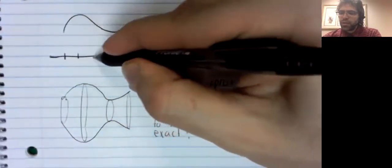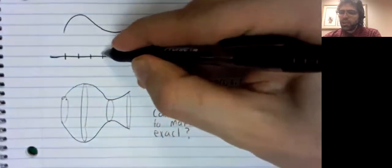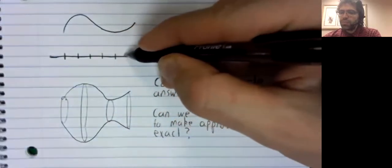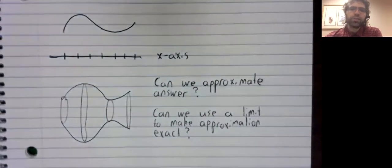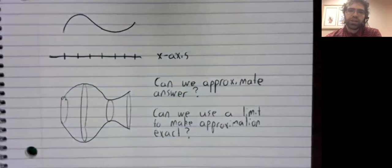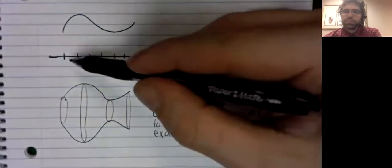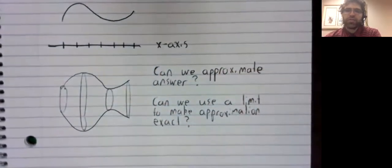We've done this once before when we were looking at area under a curve. And the method we used involved cutting the interval into little pieces, what we call a partition. So, let's look at this again. Let's partition the interval.